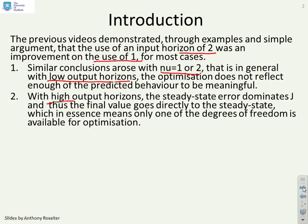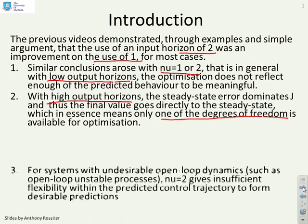If you had high output horizons, the steady state error dominates J, and thus the steady state prediction tends to go to the correct value, and then you've only got one degree of freedom left in order to optimise the rest of the behaviour. And that's why, in many cases, nu equals 2 was insufficient to give good predictions.